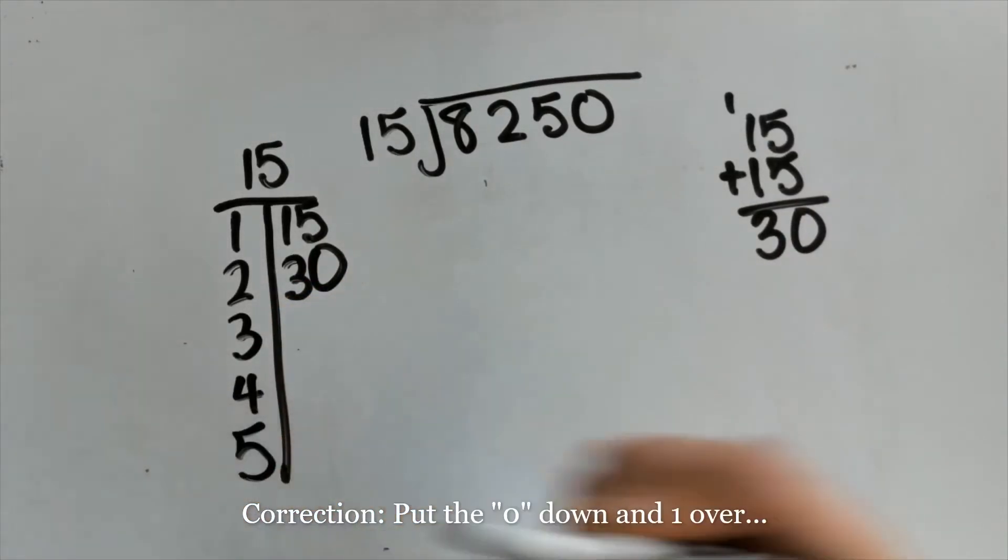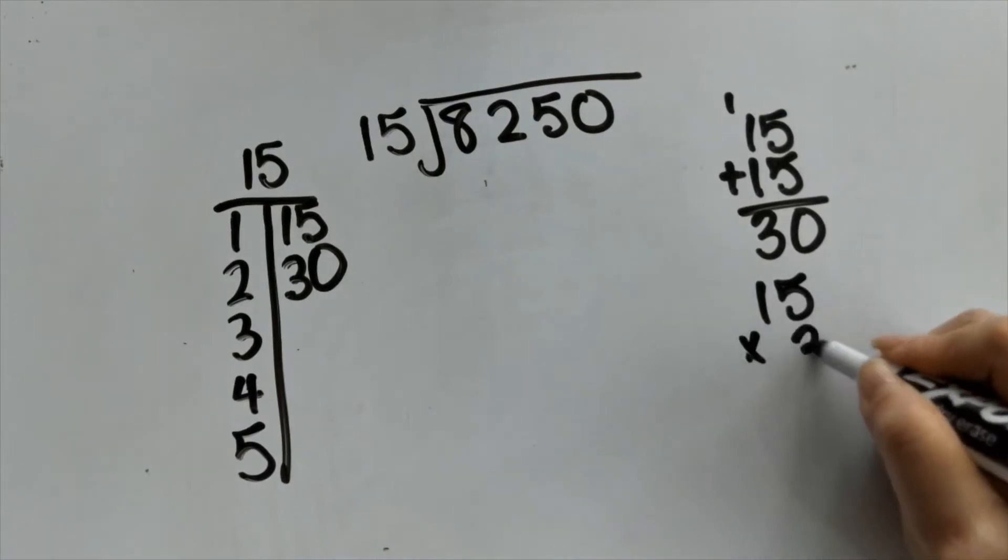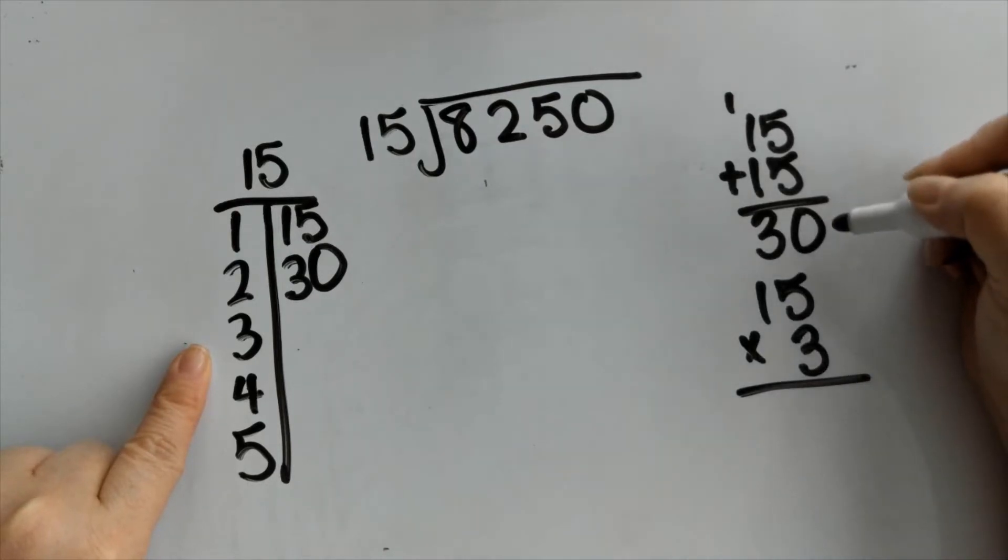Now I'm going to make this list until I get to about 5 and I'm going to stop right there. So now when I'm multiplying, I'm looking for the fact family of 3 times 15.